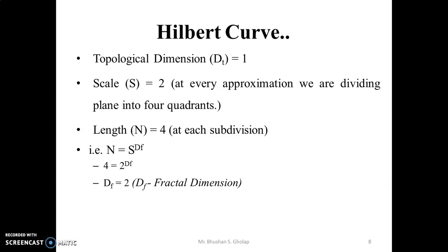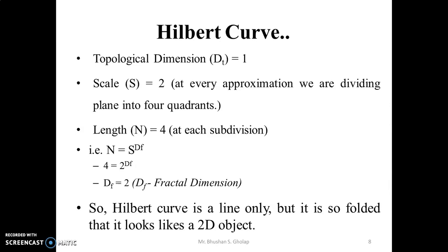So, Hilbert curve is a line only. But it is so folded that it looks like a two-dimensional object.